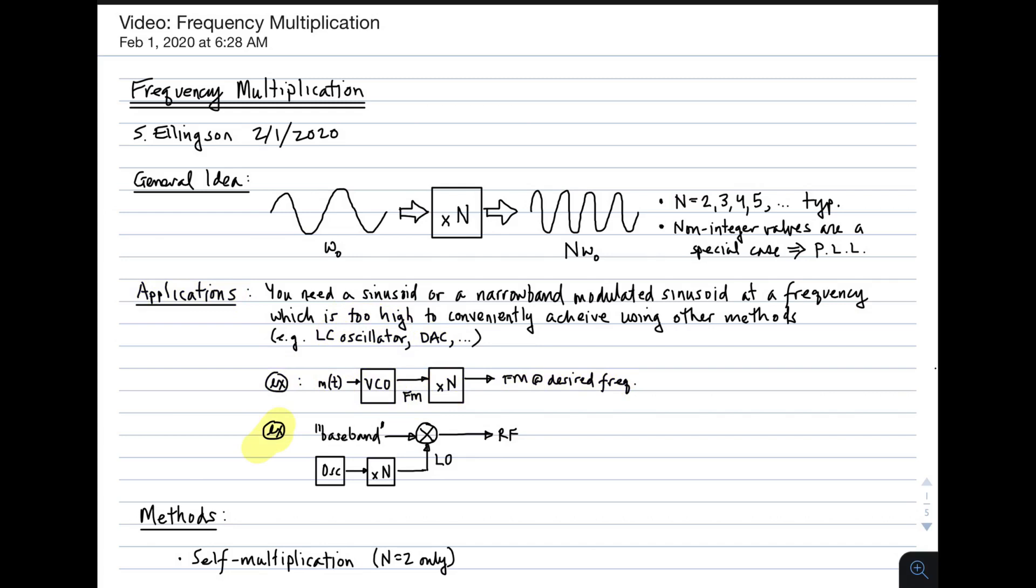Another example is generation of LOs, that is a local oscillator signal. There you have an oscillator. It's convenient to generate this frequency at a relatively low frequency. You multiply by n to get whatever frequency you want, and now you're able to mix the baseband signal up to RF. So doing this much may be easier than generating the signal at the intended LO frequency directly.